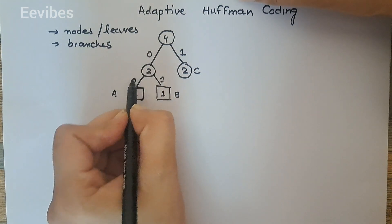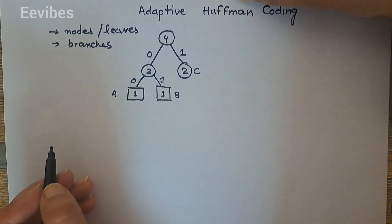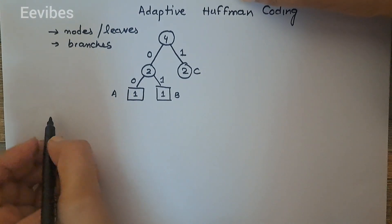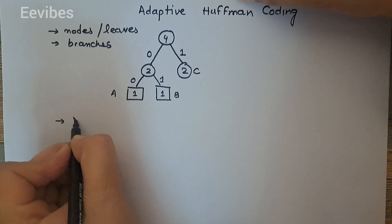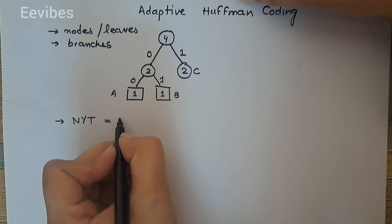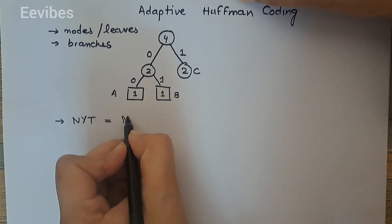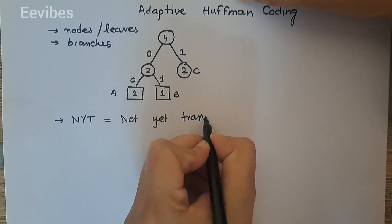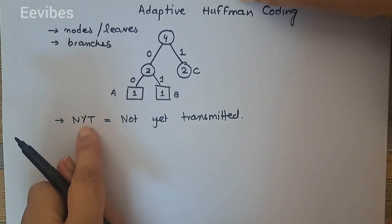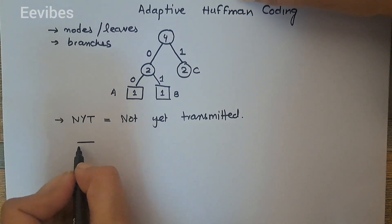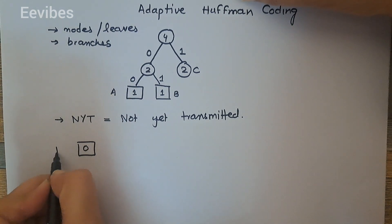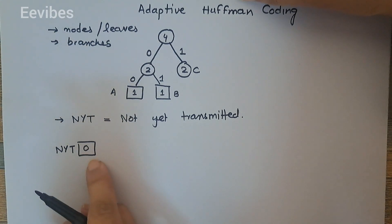In the adaptive Huffman coding scheme, we introduce a new terminology called the NYT node — NYT stands for 'Not Yet Transmitted,' and it is used for the representation of a symbol not yet transmitted. Initially we start from this node having its weight value equal to zero, and it is always represented by a square bracket. The weight of the NYT node will always be equal to zero.